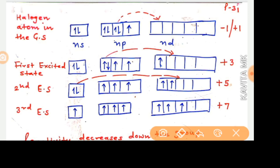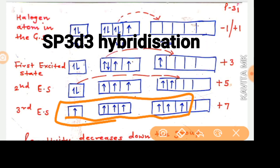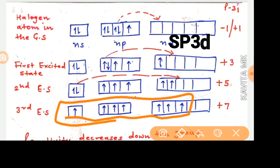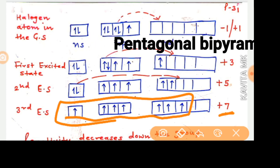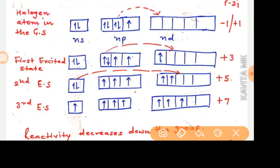In a similar manner, when the third excited state takes place, the third electron also jumps to the outermost orbital. As you can see in the figure, we have the maximum number of unpaired electrons, which has risen to seven. When seven is the number of unpaired electrons, the oxidation state rises to plus seven. So we conclude that halogens can not only show a minus one oxidation state but can also show positive oxidation states when they react with more electronegative elements like fluorine and oxygen.